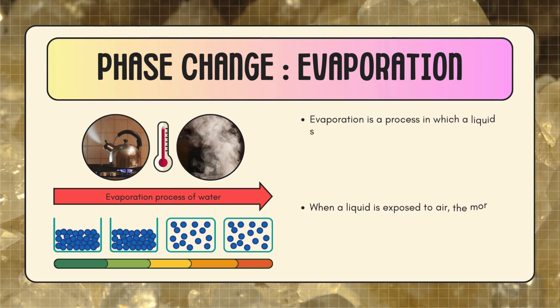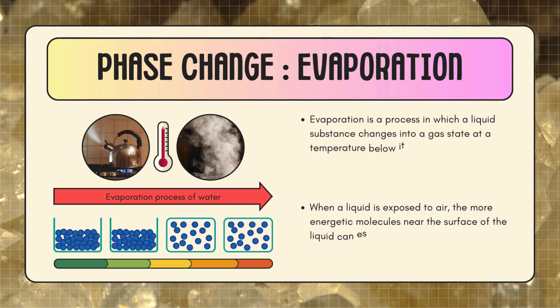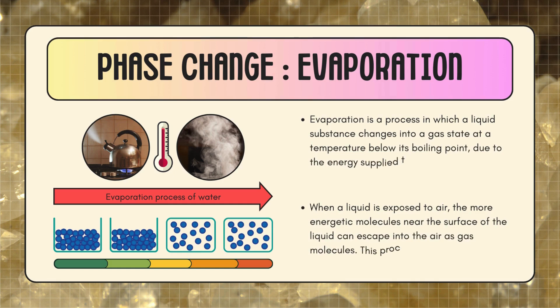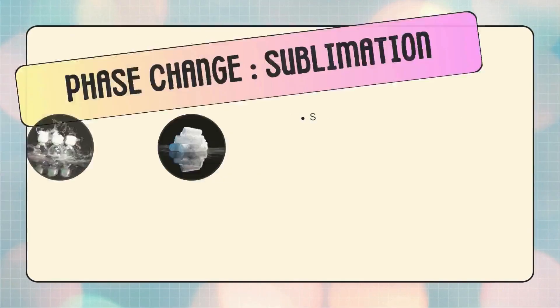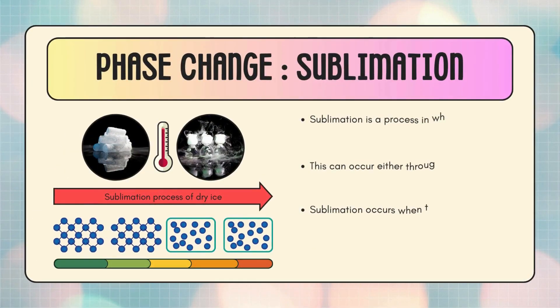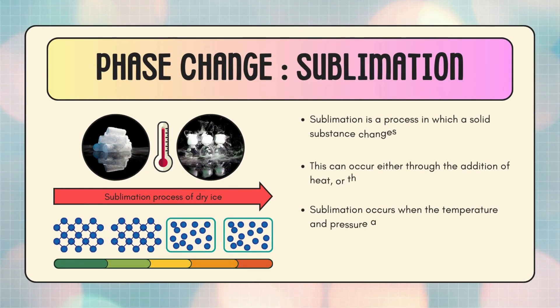Evaporation is a process in which a liquid substance changes into a gas state at a temperature below its boiling point, due to the energy supplied to the surface molecules of the liquid. When a liquid is exposed to air, the more energetic molecules near the surface can escape into the air as gas molecules. This process continues until all of the liquid has been converted into gas.